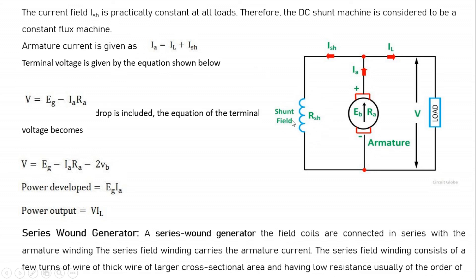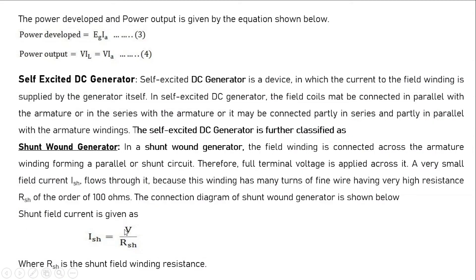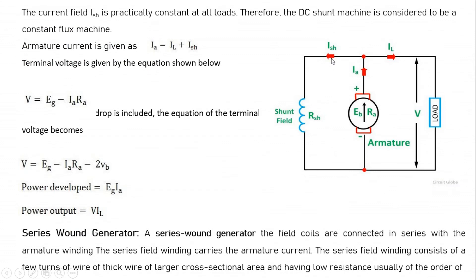In a shunt wound generator, a very small amount of current flows through the shunt field, and most of the current flows through the armature winding and load, because the shunt field resistance is made of very high resistance with a very high number of turns. ISH = V/RSH, because the shunt field and load are in parallel, so V/RSH gives ISH. The armature current IA is divided into two: ISH and IL, so IA = IL + ISH.